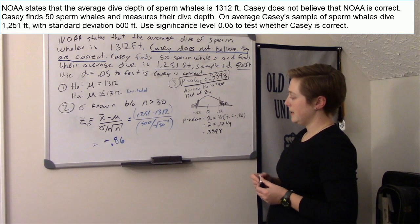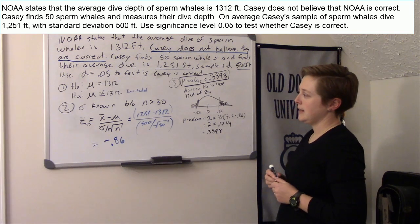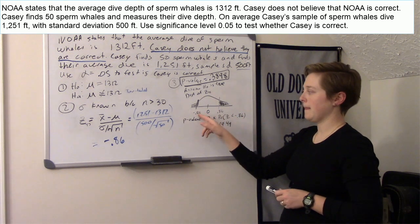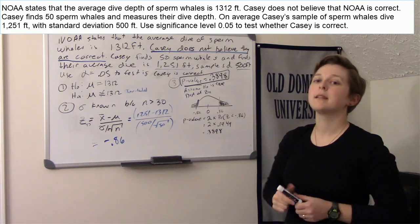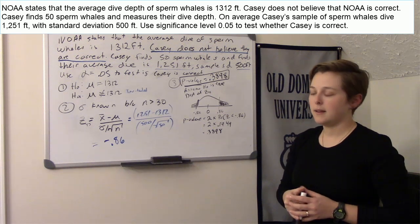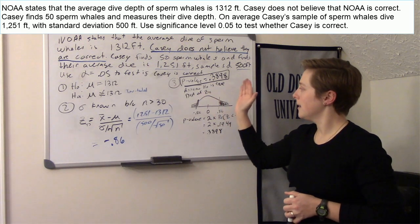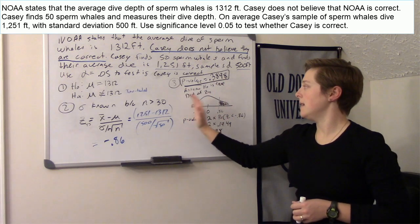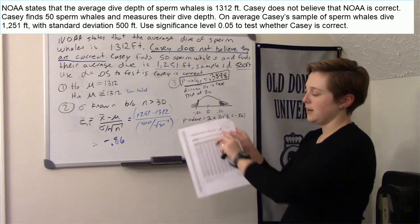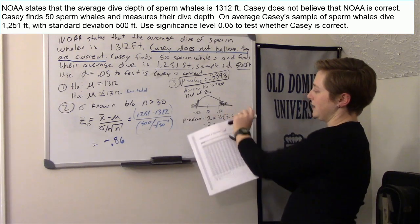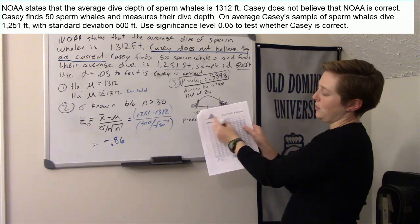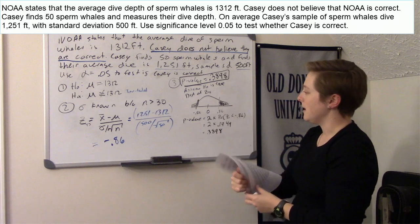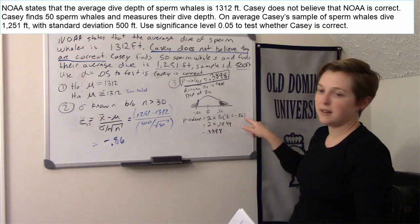If your test statistic from step two is a positive number, you'd still want to use the negative z-table, because if you used the positive table you'd get the entire middle area and would have to do one minus. It's always easier to use the negative side, because the negative table gives you the tail area directly. So even if this were positive 0.86, you'd still look up negative 0.86.